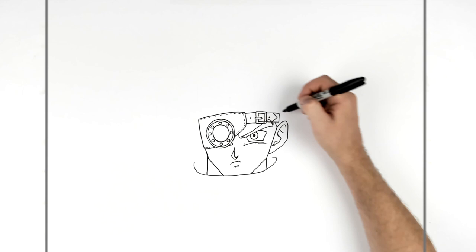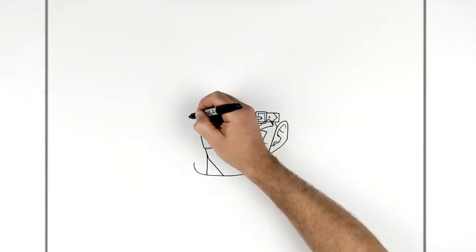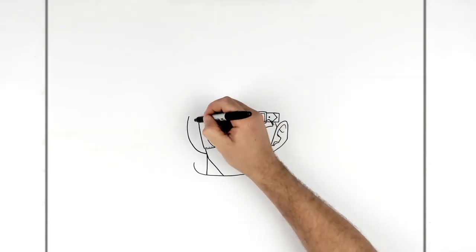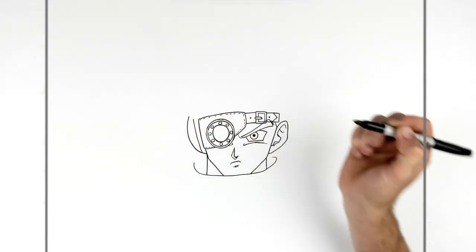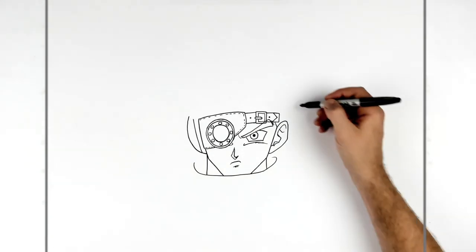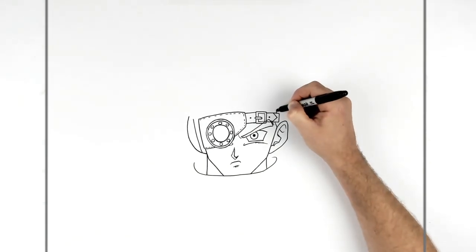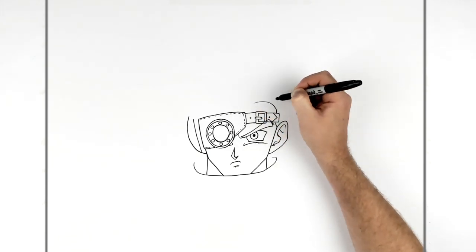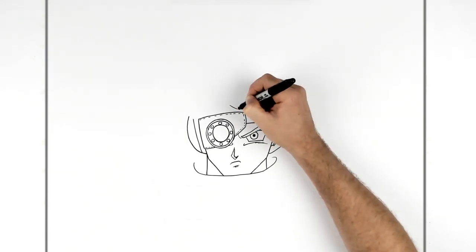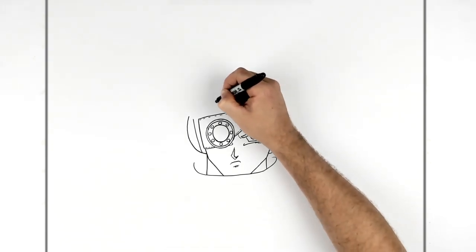So his ear on the other side is covered by this gray thing, like a cover. Like that. You can't see the top of it because of his hair. So his hairline comes out from up here. It comes down, might have some texture lines just on there, and then it goes around the other side.